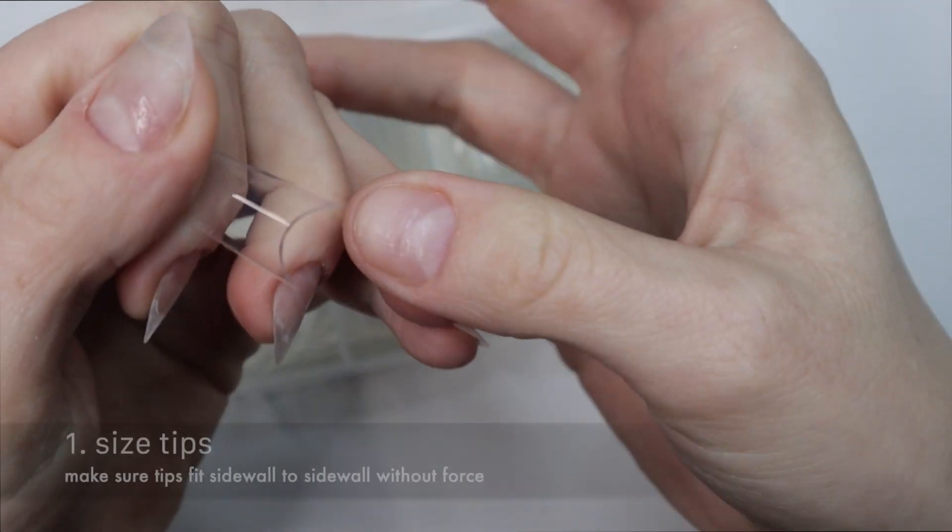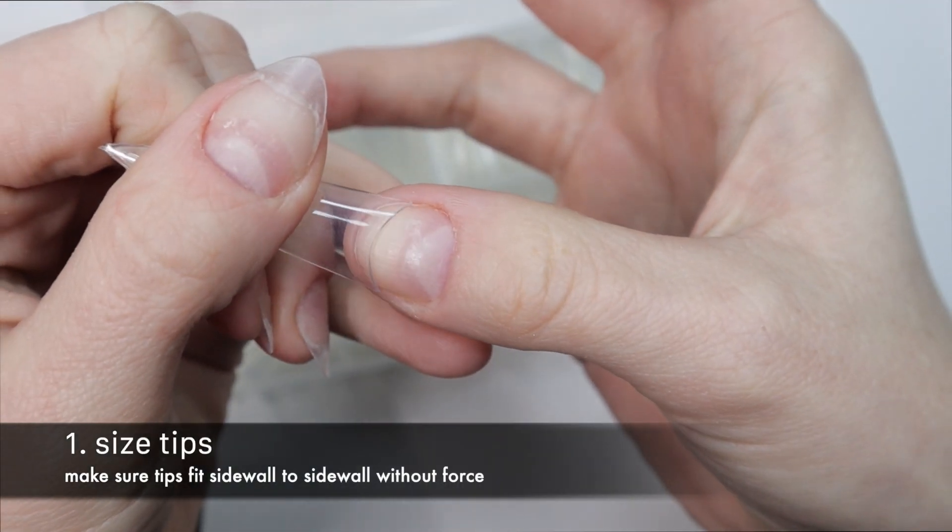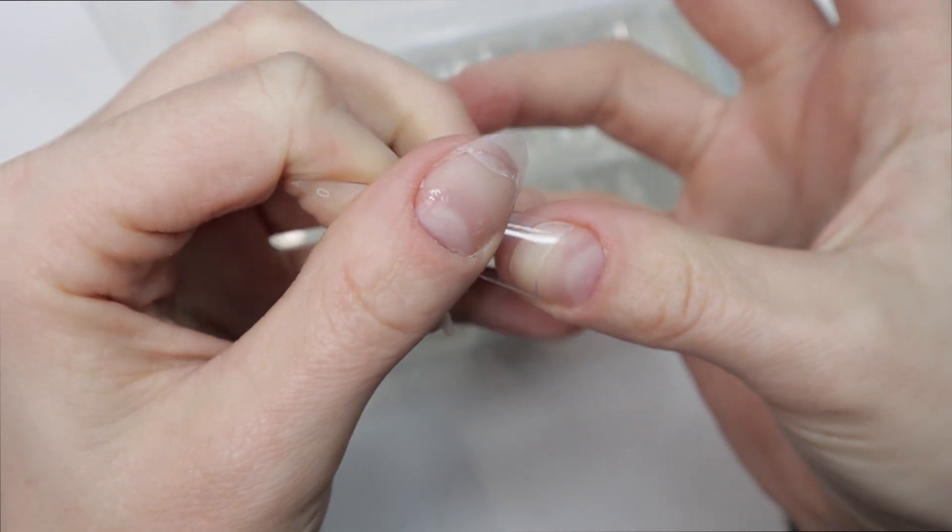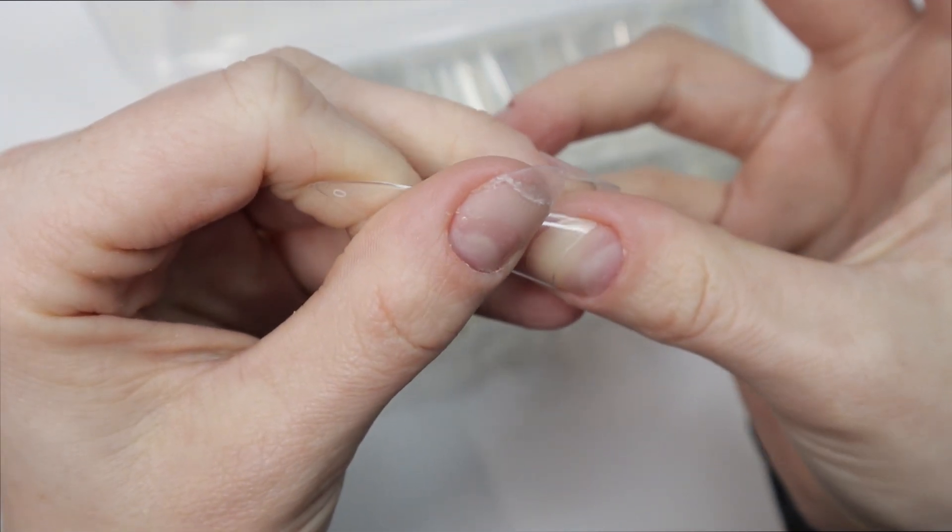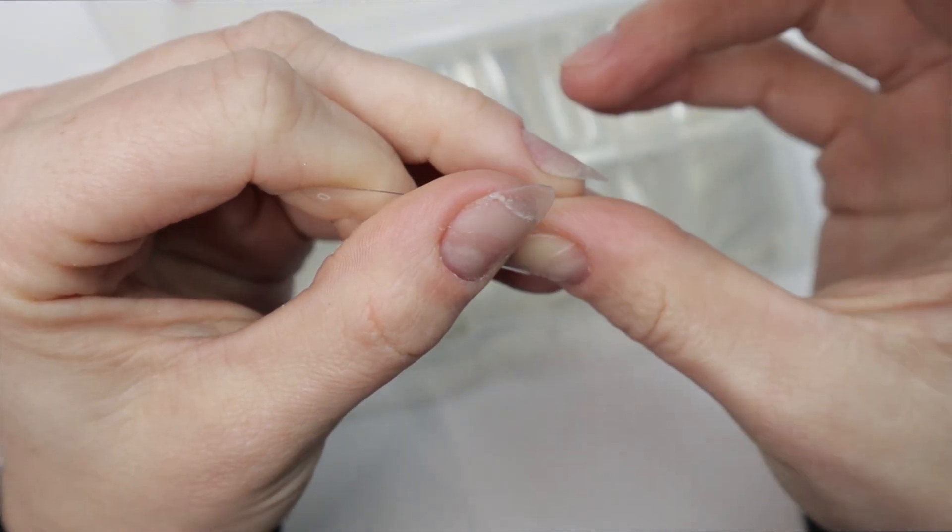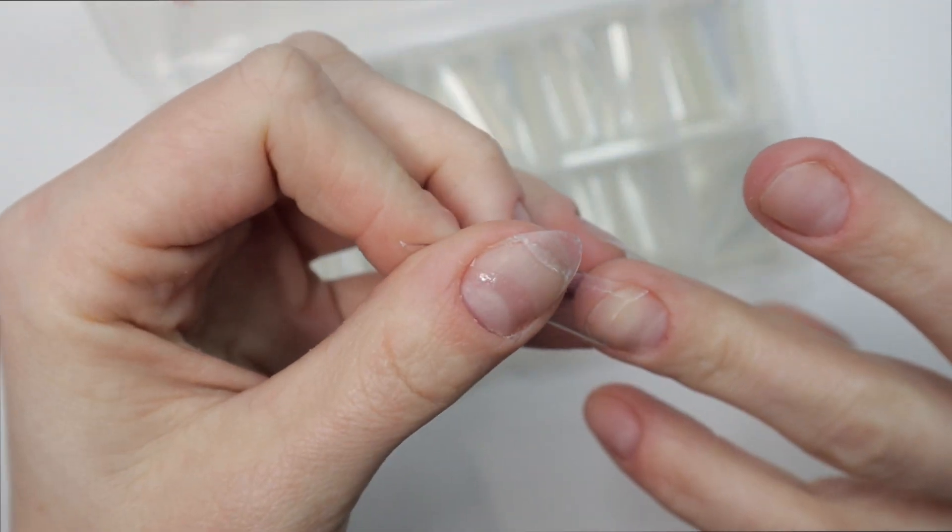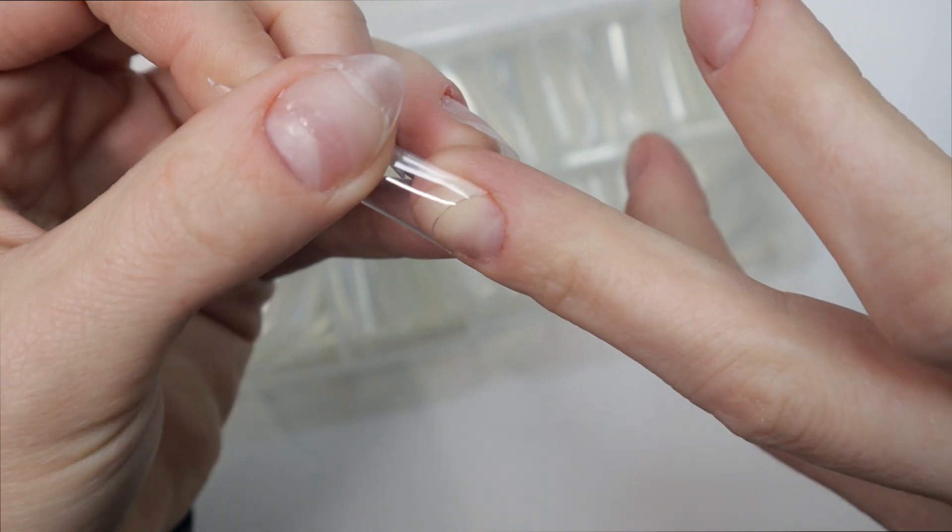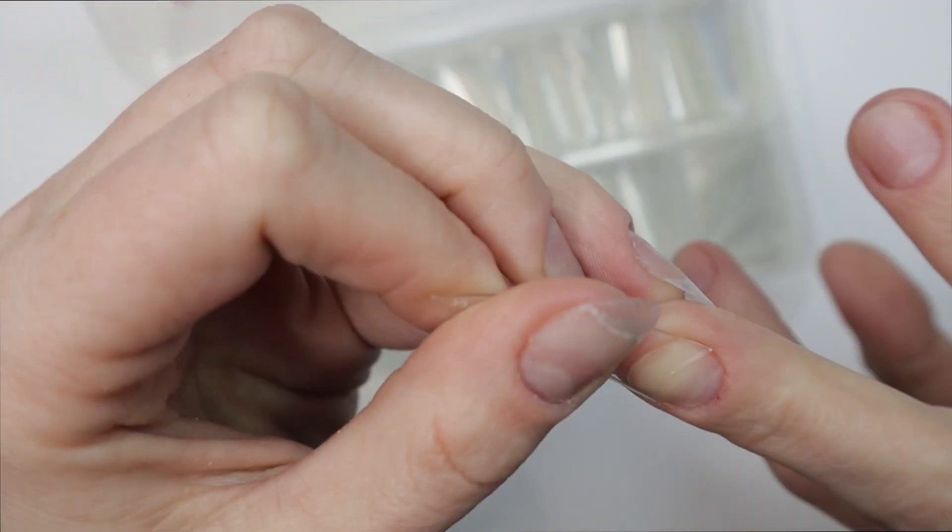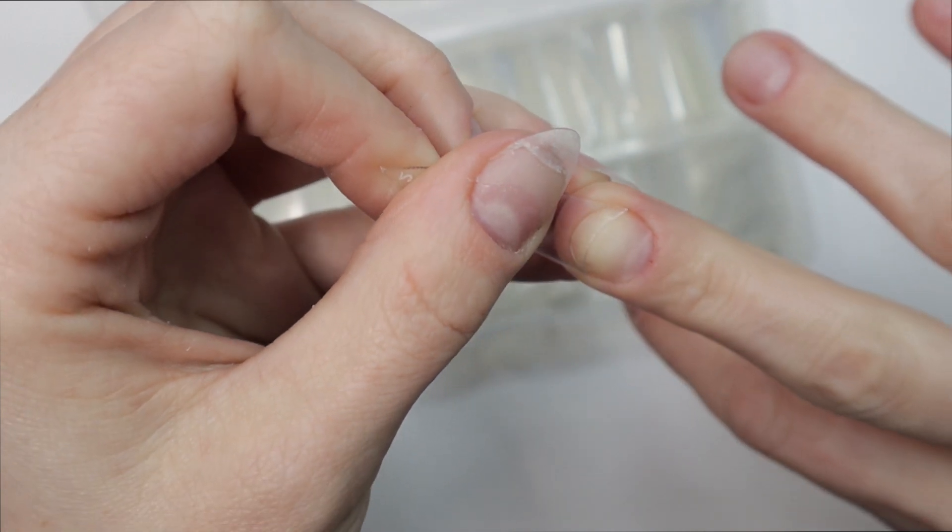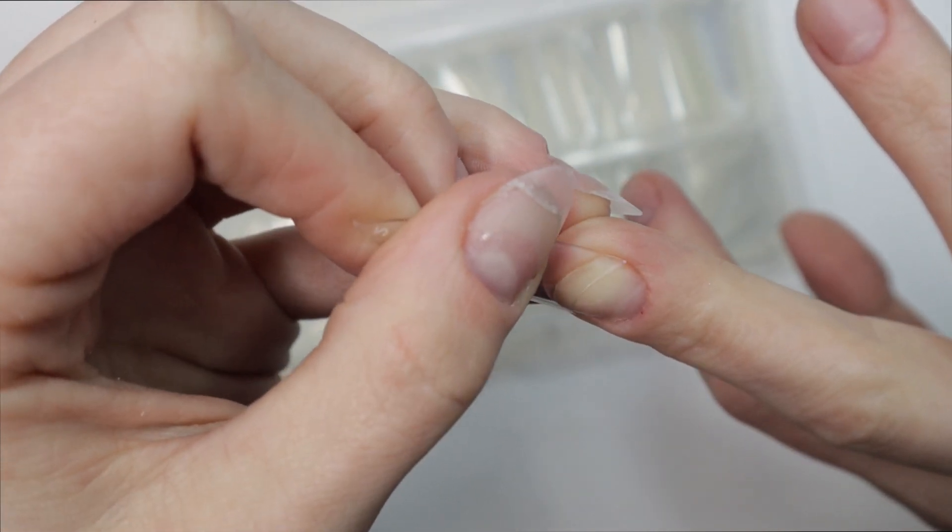The very first thing I want to do when applying nail tip extensions is to size my tips. You want to make sure that the tips fit sidewall to sidewall nice and snugly without forcing the tip down to fit. If you find yourself having to force the tip down to fit sidewall to sidewall, you should size up to a larger size.